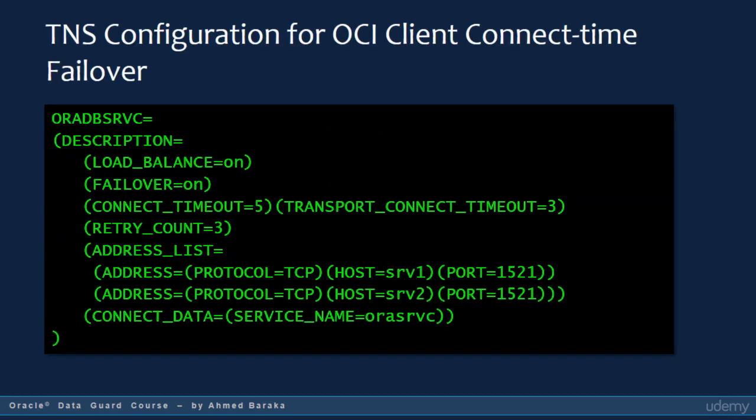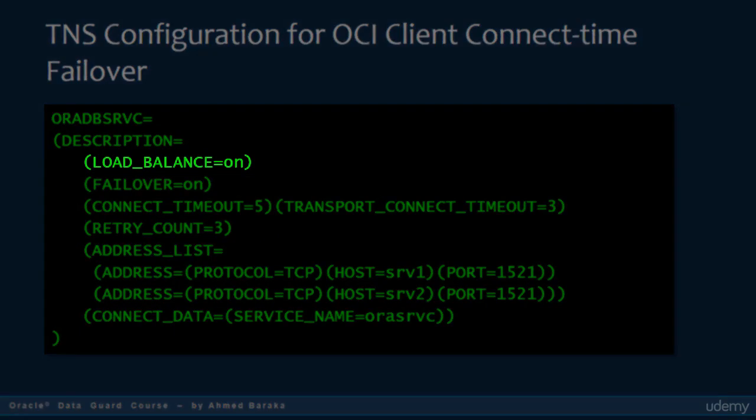This slide shows you how to configure an OCI client for connect time failover. This means when the client wants to connect to the database, it will automatically connect to the current primary database. In this case, you need to configure the tnsnames.ora file as shown in the slide example. First, notice the Load Balance parameter.